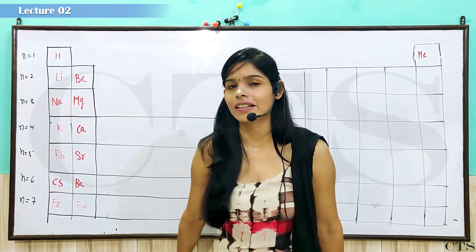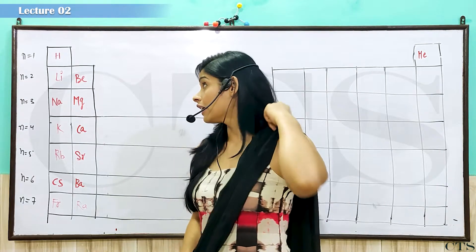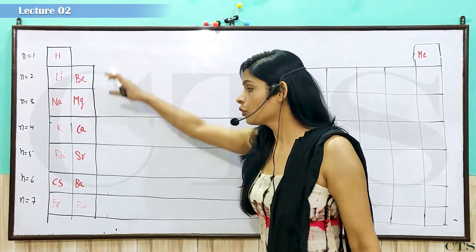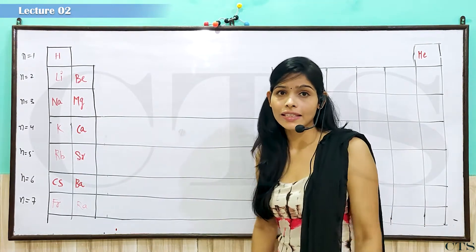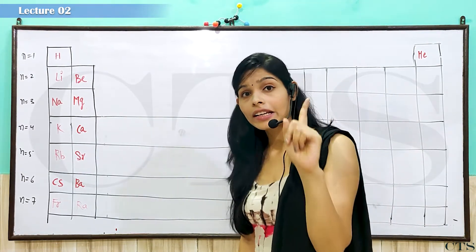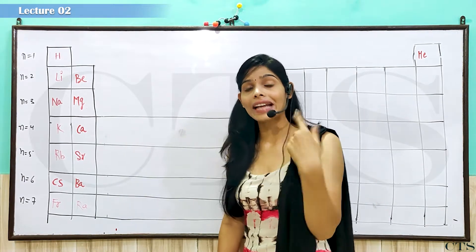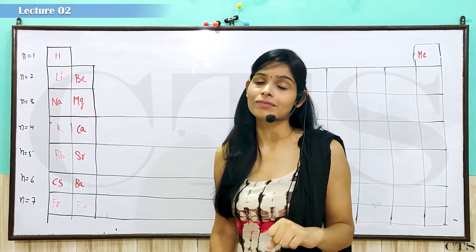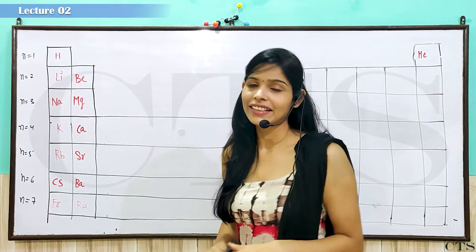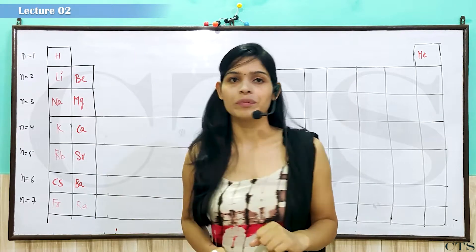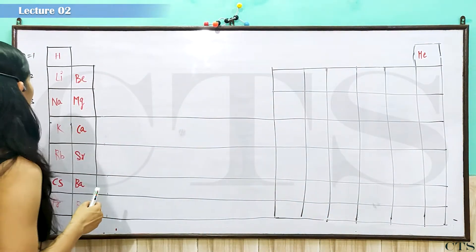Dhekhe beta ji, yhe long form of periodic table ke anndar, kya kiya unhohne, unhohne seven periods rakhye, jaisa ki Mosley ne bola tha. Lekin unke column kitne thay, nine thay. To inho ne kya kiya, nine ke bajaya, usko kitna kar diya, eighteen kar diya. Kitnye columns bole gaya, ahthara columns bole gaya.